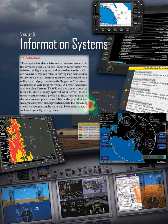Chapter 5: Information Systems Introduction. This chapter introduces information systems available in the Advanced Avionics Cockpit. These systems support you in following flight progress, and in avoiding terrain, traffic, and weather hazards on route.